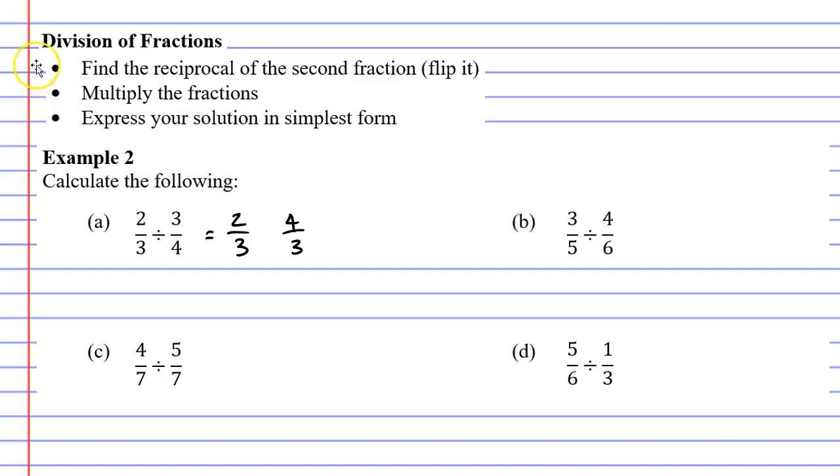The second step says to multiply the fractions. So instead of dividing them now, we're going to multiply them. Basically what we did is we flipped the second fraction and we changed the divide to multiplication. Now it's really easy to work out. All we need to do is multiply the top two numbers: 2 times 4 is 8, and the bottom two numbers: 3 times 3 is 9. That concludes question A.